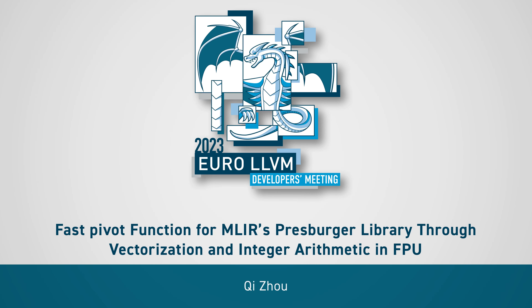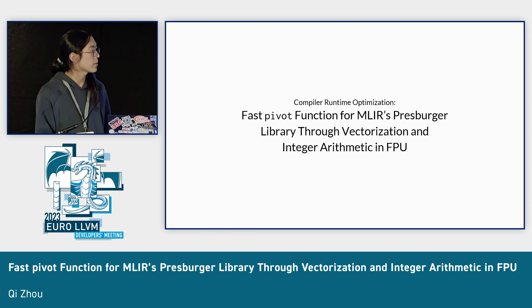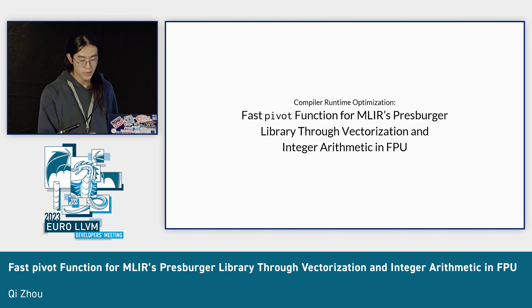I'm here to present a compiler runtime optimization: a fast pivot function for MLIR's Presburger library through vectorization and integer arithmetic in the FPU.